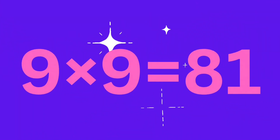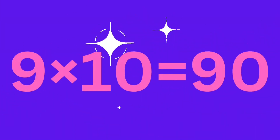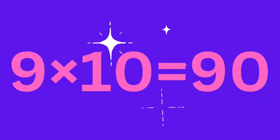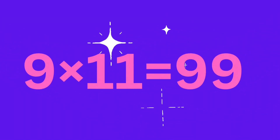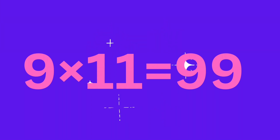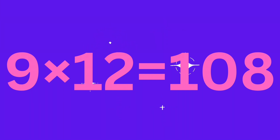9 nines are 81. 9 tens are 90. 9 elevens are 99. 9 twelves are 108.